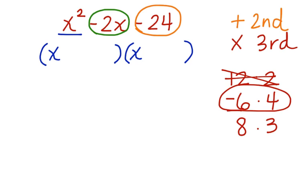Let's look at the last one, 8 times 3. 8 times 3 can give us 24. But 8 plus 3, no matter how we put the negatives, it can't give us negative 2. So this is our answer, negative 6 and 4. Now we're going to put them in. Let's put a negative 6 in and let's put a positive 4 in.